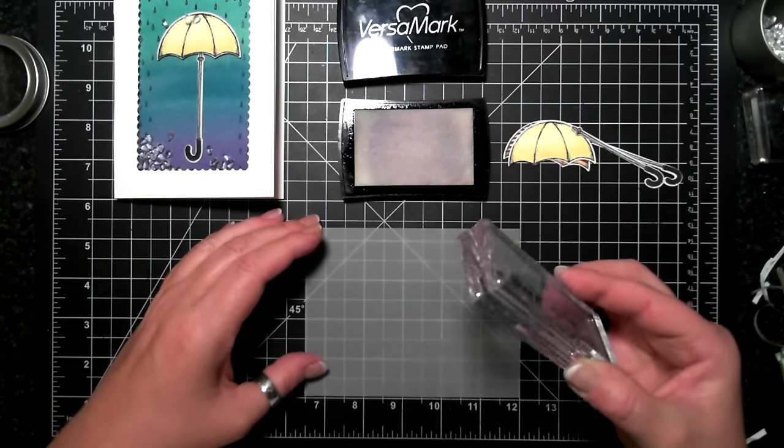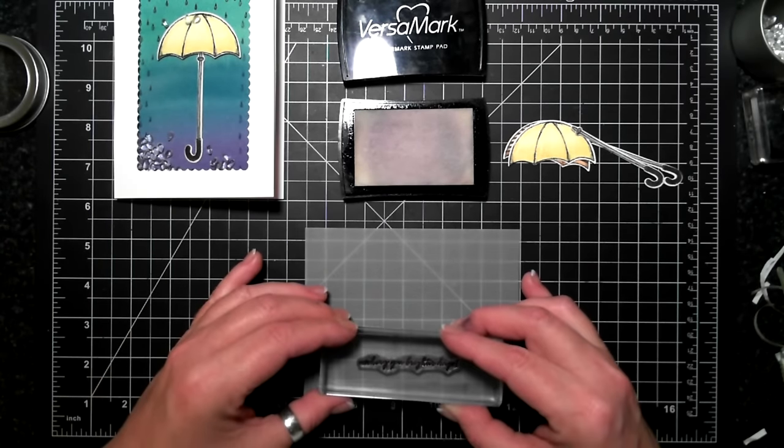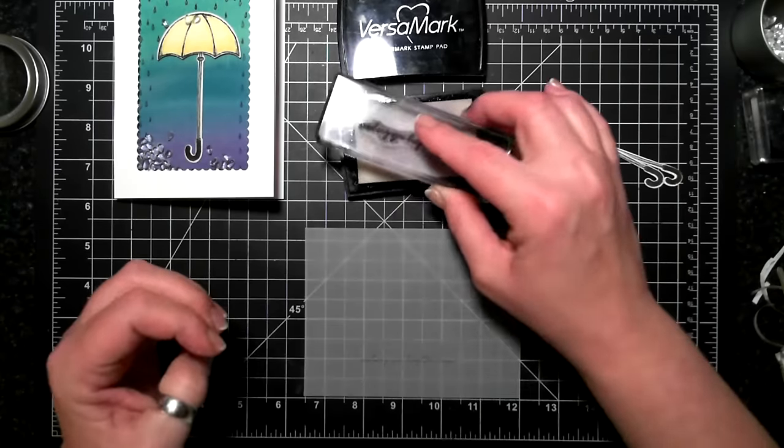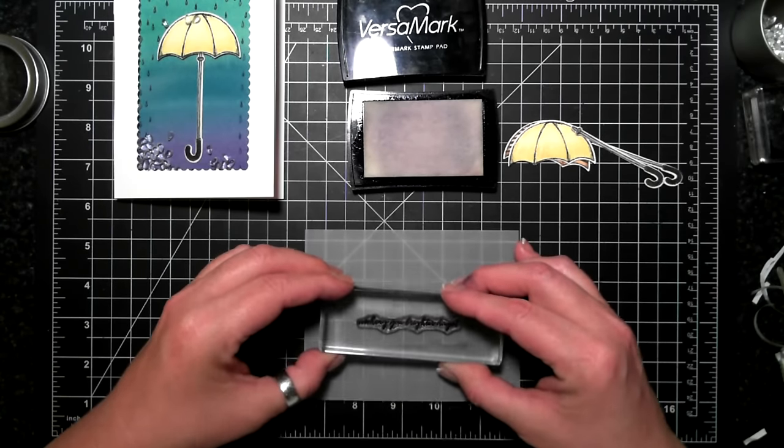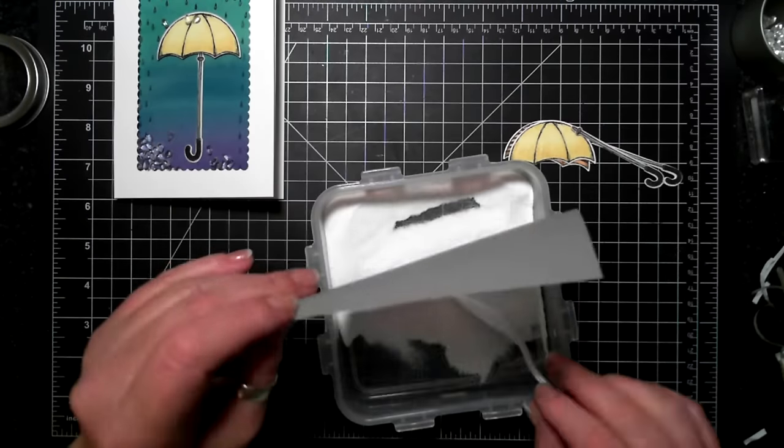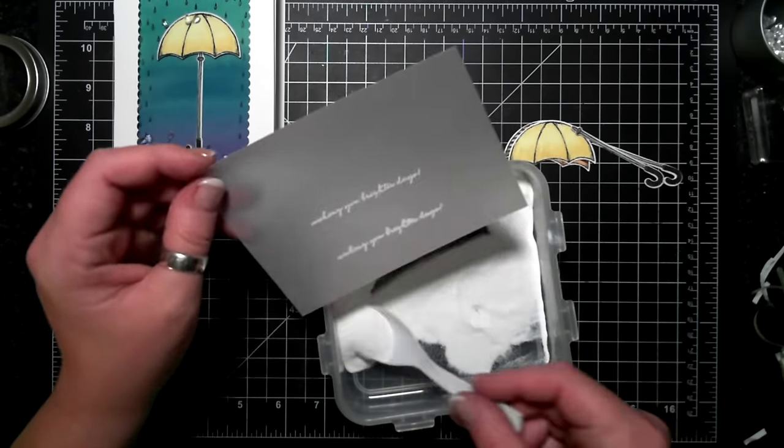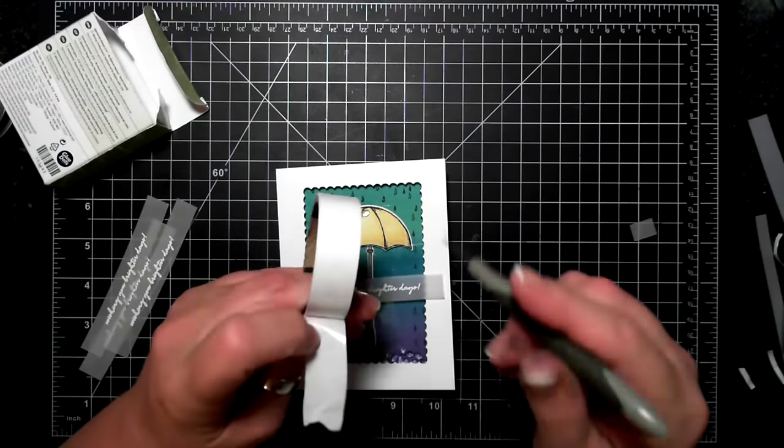So I've used my embossing buddy and now I'm stamping with Versamark ink and the sentiment 'wishing you brighter days' is being sprinkled with white embossing powder and heat embossed, which I skipped to keep the video shorter.